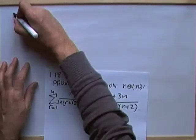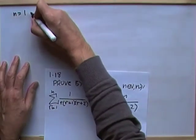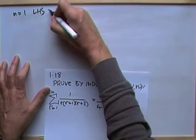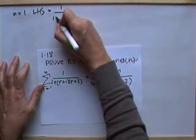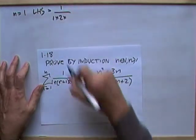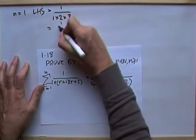First bit, same as before. Show that it is in fact true when n equals 1. Well, the left hand side, as a fraction this time, could just be the first term, r would be 1. So it'd be 1 times 1 more is 2, times 2 more is 3. So that's a sixth.